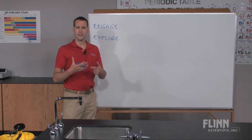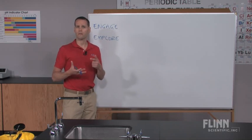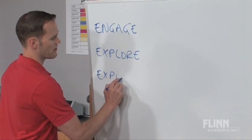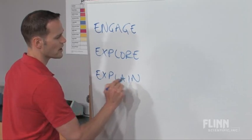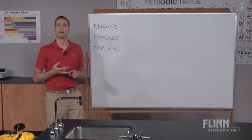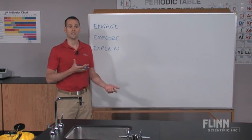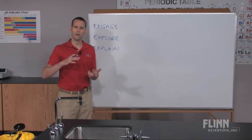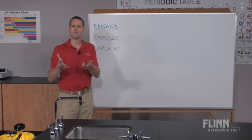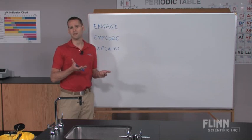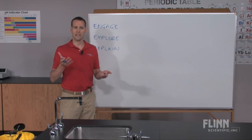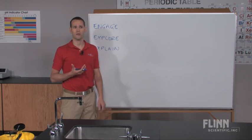After students have had a chance to explore the relationship between a few variables, the next step is the explanation step. That explanation can take varying forms — it can be done through teacher-student interactions, through students explaining things to themselves, or through seeking additional research. This is where you take concepts seen in the lab or demonstration and start wrapping understanding around them so students can explain what was going on.